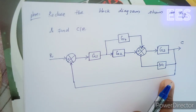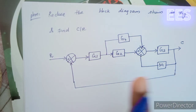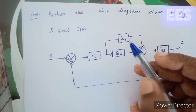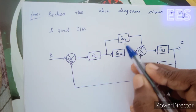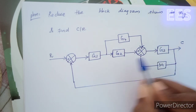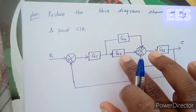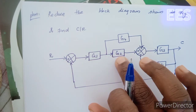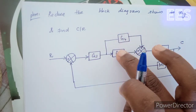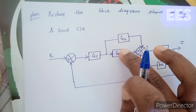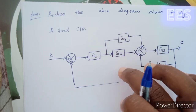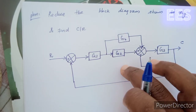The first step is combining. We will see how to reduce the block. The two blocks can be parallel or cascade — cascade means series. Now we have to combine these two parallel blocks. Here G2 and G4 are in parallel, so we can make them one block.